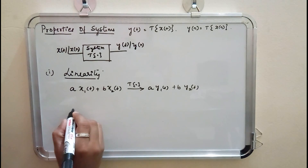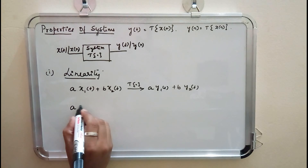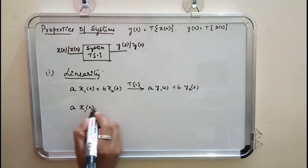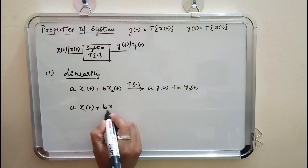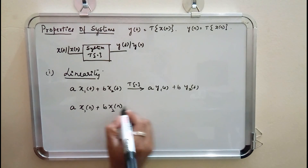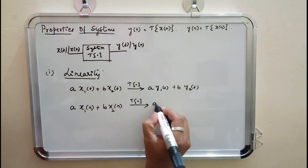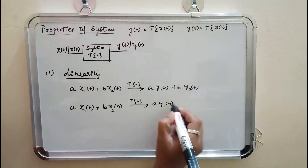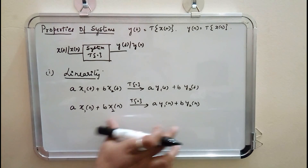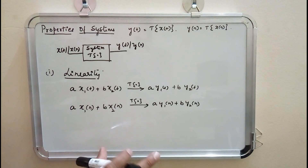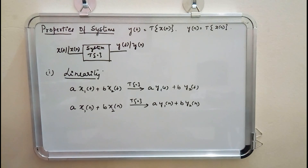For discrete time signals, the condition is: if A·X1[N] + B·X2[N] is given as input and the transformation yields A·Y1[N] + B·Y2[N], then the discrete time system is said to be linear.